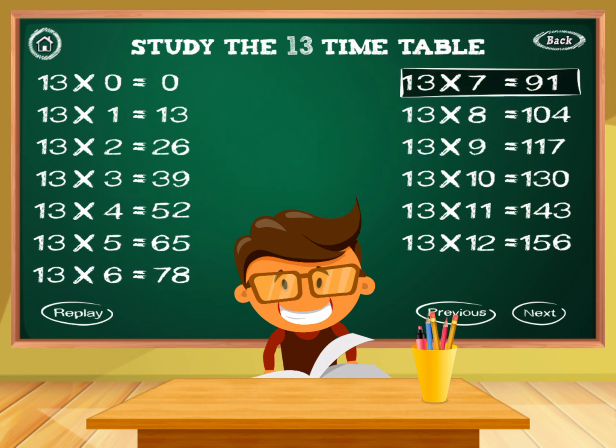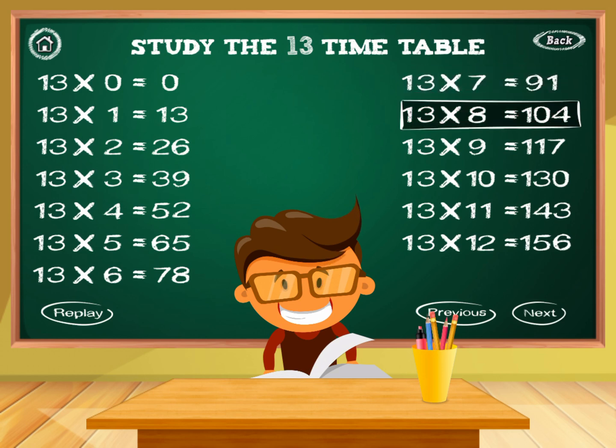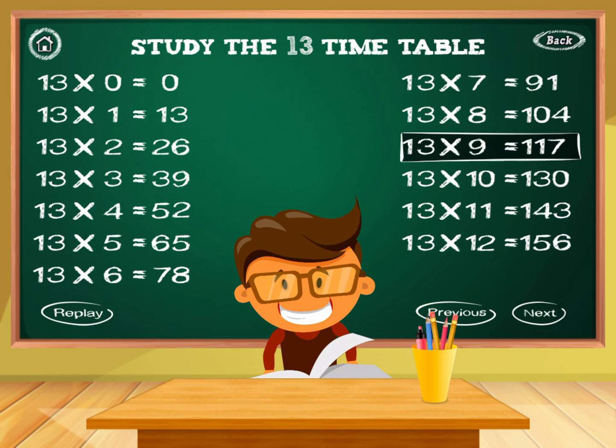13 times 7 equals 91. 13 times 8 equals 104. 13 times 9 equals 117.